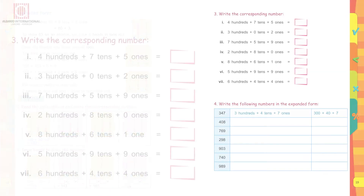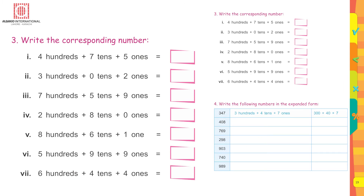Write the corresponding number. 400 plus seven tens plus five ones equals 475. 300 plus zero tens plus two ones equals 302.